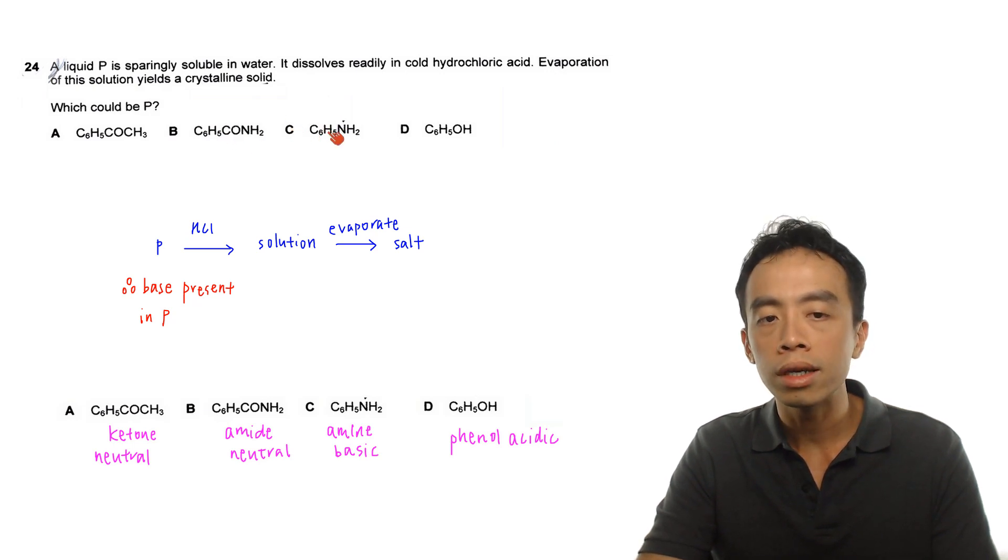Then for option C, C6H5NH2, this is amine functional group, in particular this is phenylamine. Then for D, C6H5OH, this is phenol functional group.